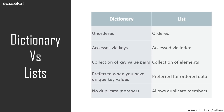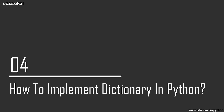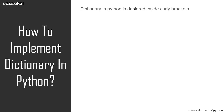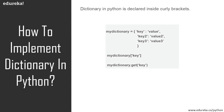I hope you are clear with the difference between a list and a dictionary. Now let's try to understand how we implement a dictionary in Python. To declare a dictionary, we have to use the curly brackets. Just like in the example, I have the dictionary named 'my dictionary' and inside it I have the key-value pairs inside the curly brackets. Let's take it up to PyCharm to understand how we implement a dictionary.